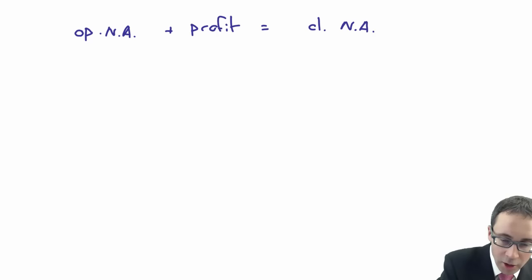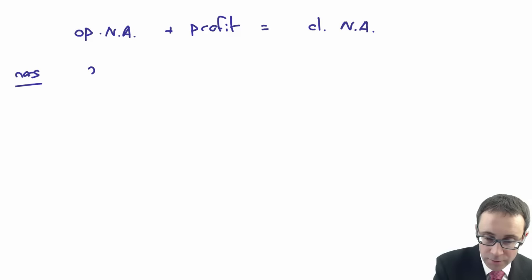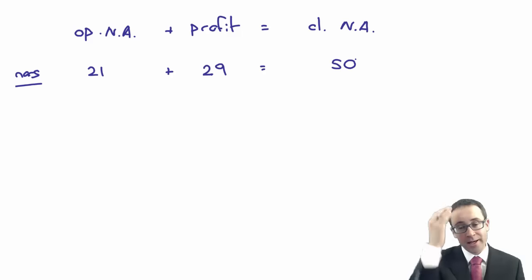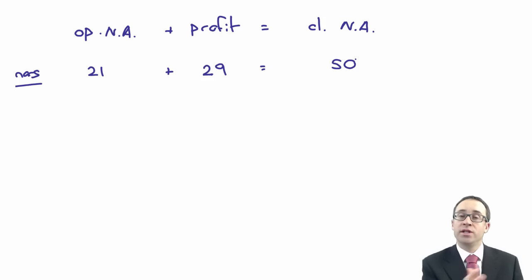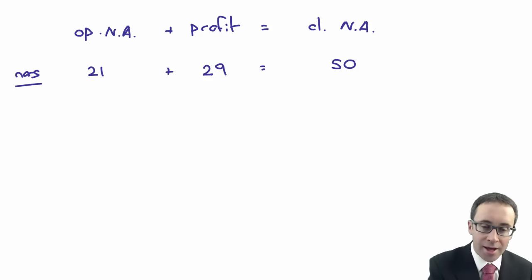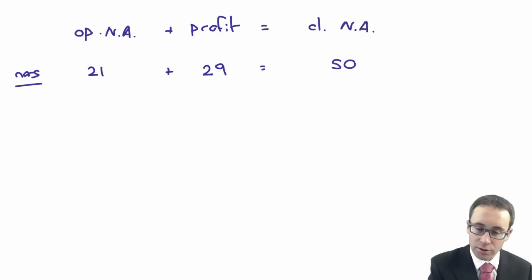Now, if we look at an overseas currency — being consistent with the overseas currency that we saw in the previous questions, if we look at DINAS — let's just make up some numbers. Opening 21, profit of 29, gives me closing of 50. In the overseas currency, that's all fine. However, we then need to translate that functional currency of the subsidiary into the presentation currency of the group, and that's where the issues arise.